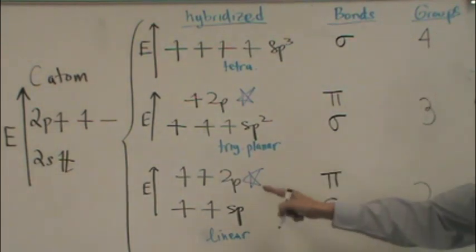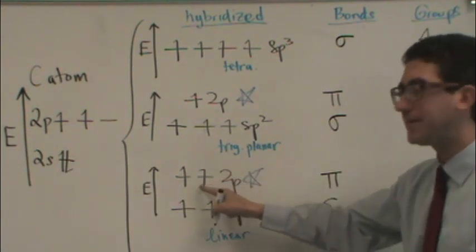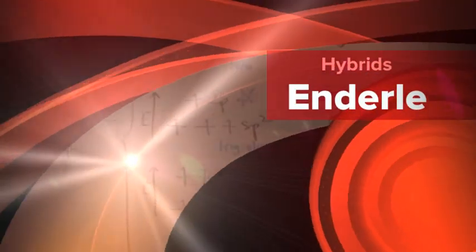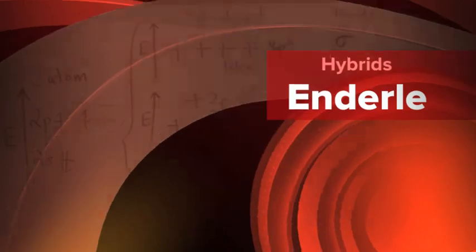Because there's two of the 2P unhybridized orbitals, that will result in two different pi bonds. More will be said about this concept in lecture.